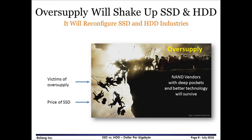We cannot avoid oversupply of NAND and an abrupt price drop of NAND and SSD because of heavy investment in 3D NAND. Recently, Toshiba and Western Digital announced an additional $15 billion investment in 3D NAND, so total investment in 3D NAND has already reached $75 billion. It will certainly reconfigure the storage market. Even though 3D NAND does not have a clear path to low cost yet, because of oversupply I expect that the dollar per gigabyte of SSD will drop down to 10 cents within 2 years.